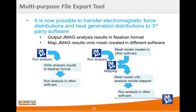When running a coupled analysis, it is now possible to use JMeg's multi-export tool to transfer electromagnetic forces or temperature distributions to third-party software packages. The tool will export results in NASTRAN format that can be run as they are or mapped onto meshes created outside of JMeg. This will be a very powerful tool to help keep consistent with JMeg's open platform principles.